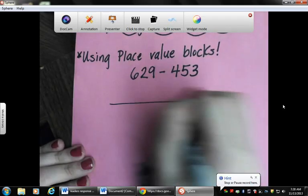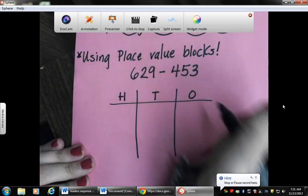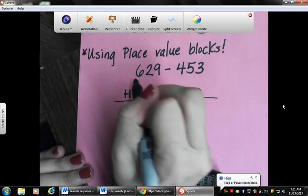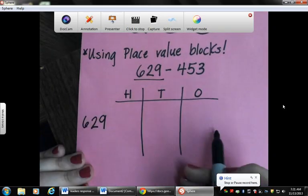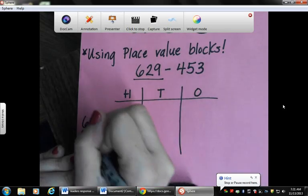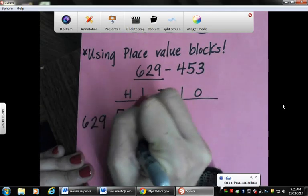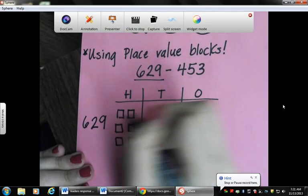I'm going to draw my hundreds, tens, and ones. And I'm going to take the biggest number and write it next to our chart, because this is the number that we're drawing in place value blocks. So we have six hundreds blocks, two tens, and nine ones.